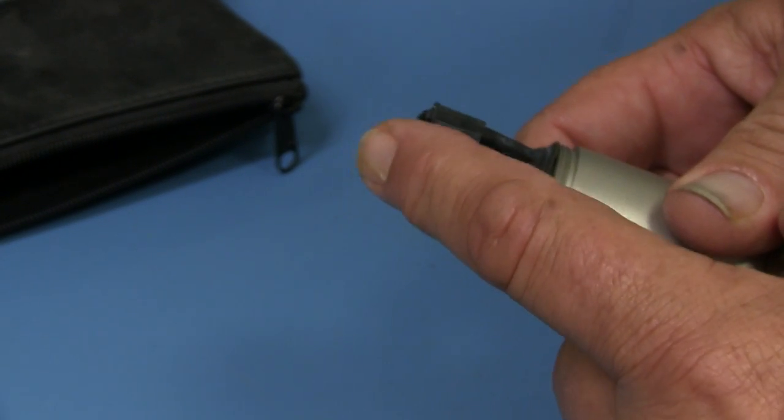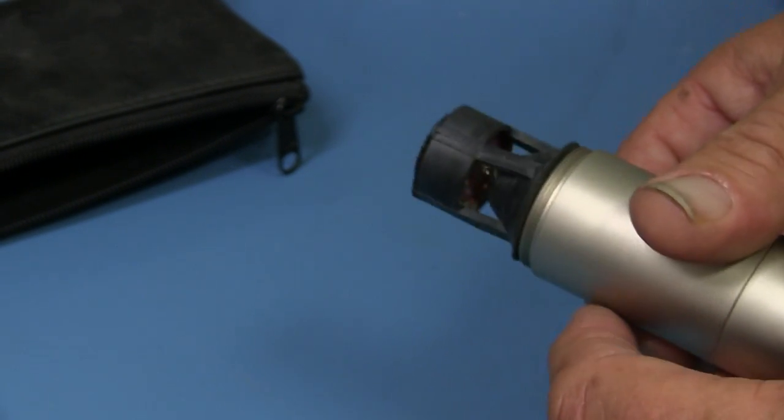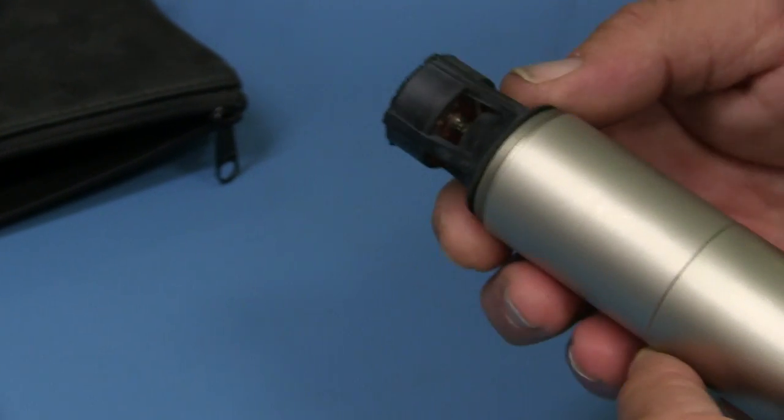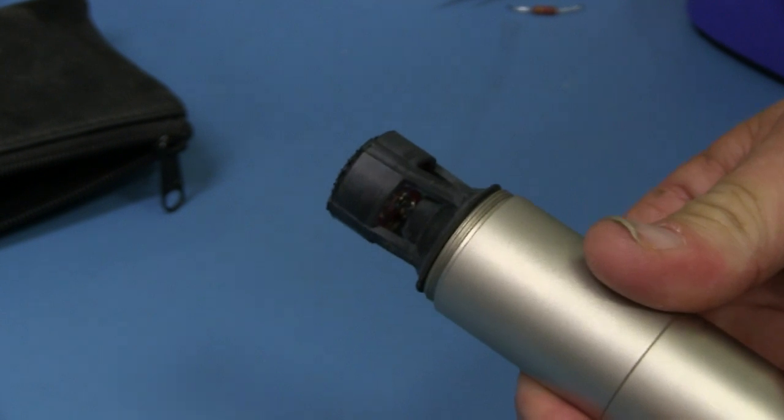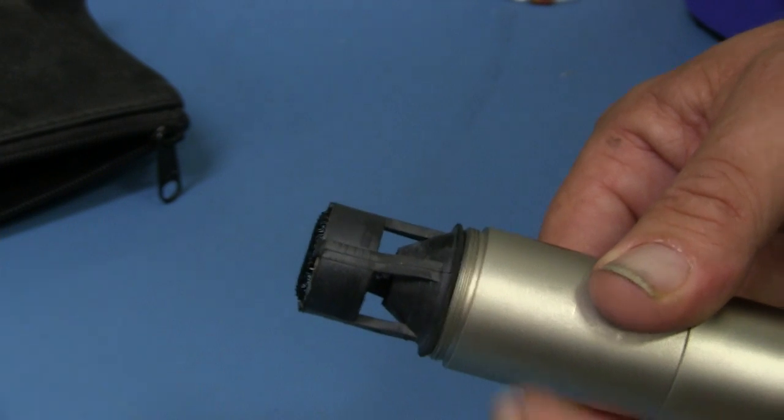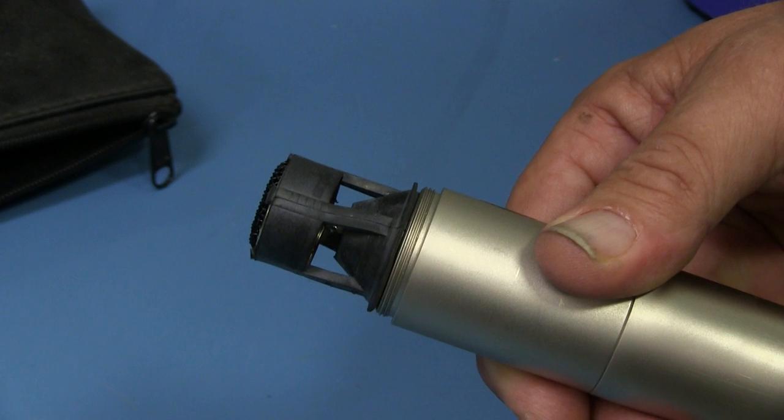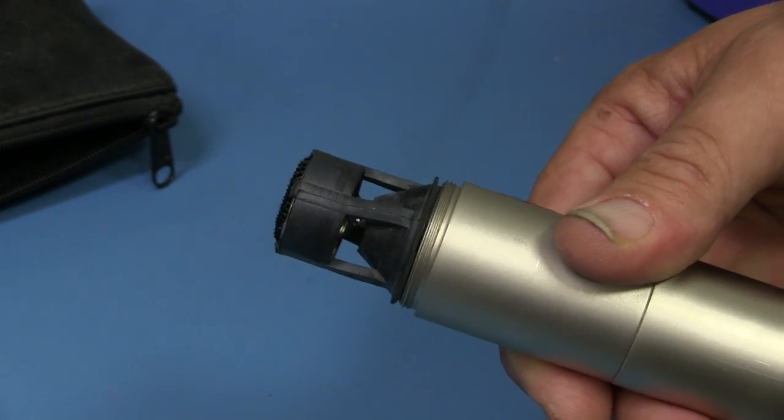These rubber supports, a friend of mine designed those while we were both working at Rode Microphones. The purpose of that particular shape is to allow entry of sound from both the front and to the rear of the capsule, because it's a supercardioid capsule and we need sound into the rear.